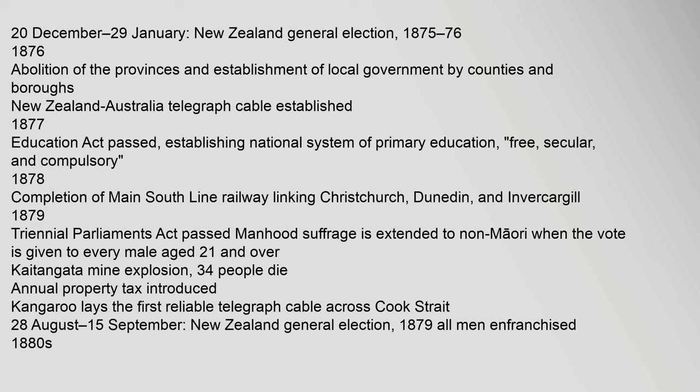1875. 20 December – 29 January: New Zealand general election. 1875–76: Abolition of the provinces and establishment of local government by counties and boroughs. New Zealand–Australia Telegraph cable established. 1877: Education Act passed, establishing a national system of primary education — free, secular and compulsory.